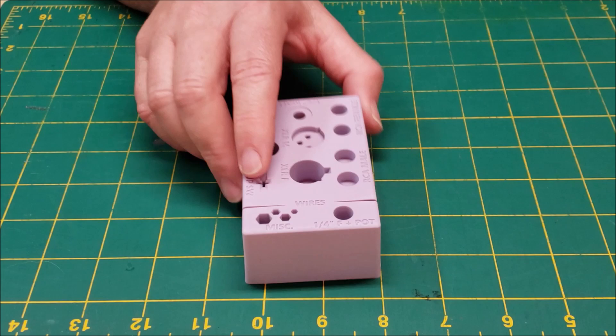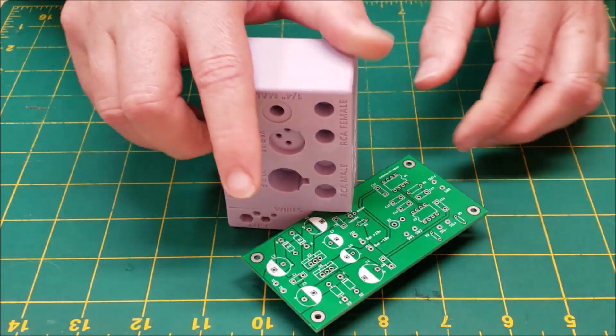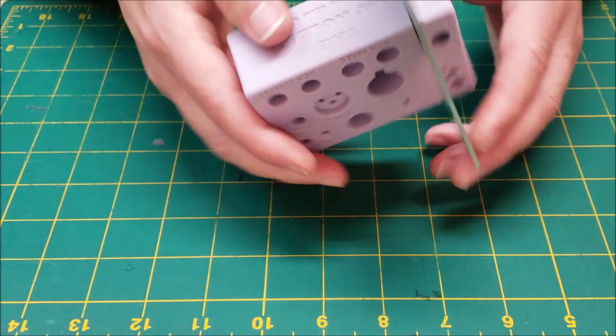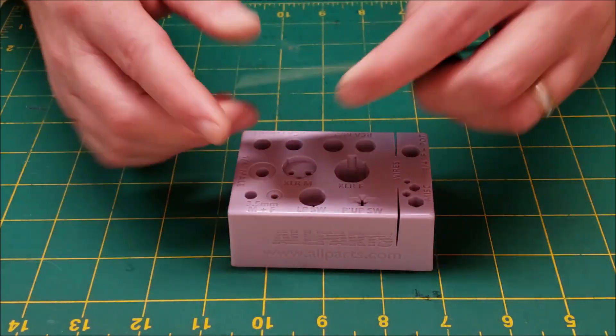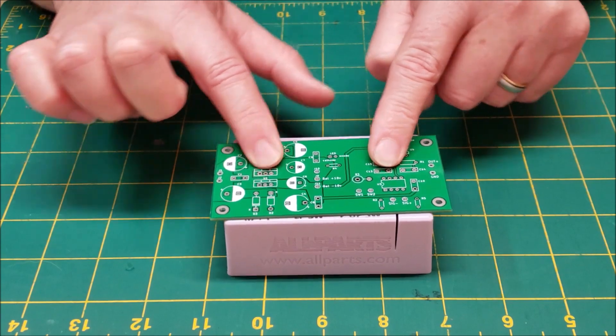The slots double as circuit board holders. You can stuff your components on this side and then solder them on this side. You can also put the circuit board right on top of your hot holder and it won't slide around.